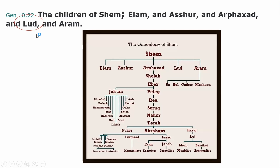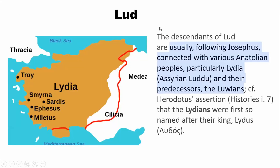Now we're going to talk about Lud. Lud was one of the sons of Shem. Lud is a little harder to identify. The descendants of Lud are usually, following Josephus, connected to Anatolia — the old ancient name for Asia Minor, particularly Lydia. You can see that this is Lydia. This is Sardis or Sardinia. Many of these towns here are mentioned in your scripture — the Ephesians, Smyrna. They lived in that region of Asia Minor.